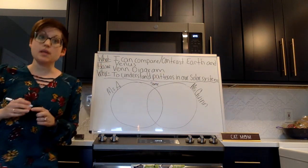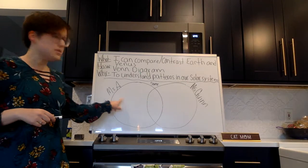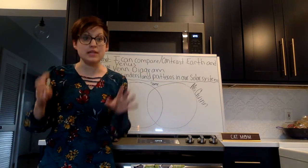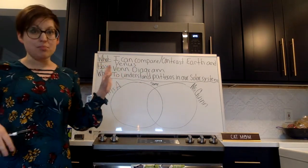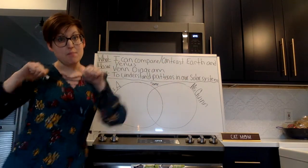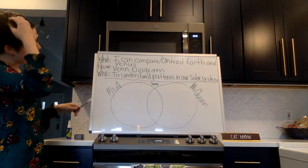Then on the outside of our circles, this is where you'll be putting things that are unique to that planet. So we're going to do a quick example that is not Earth and Venus, but it's about Miss Arbuckle and our co-teacher Miss Quinn.